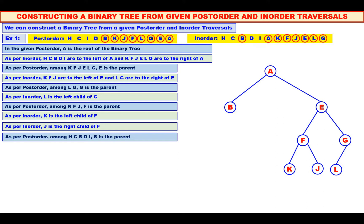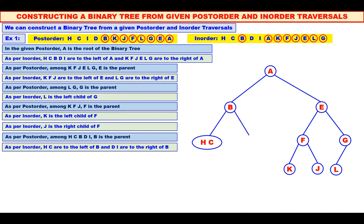Now, see the inorder. To the left of B we have H, C. To the right of B we have D, I. Therefore, H and C should be in the left subtree of B, and D and I should be in the right subtree of B. We will mark that.